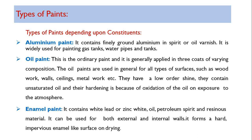Oil paint is the ordinary paint and is generally applied in three coats. It can be used for wall surfaces, wooden surfaces, and metal surfaces because the base is oil — it is oil-bound. Oil paints are used in general for all types of surfaces such as woodwork, walls, ceilings, and metalwork.